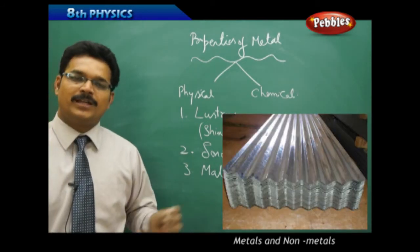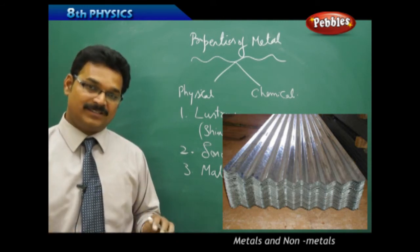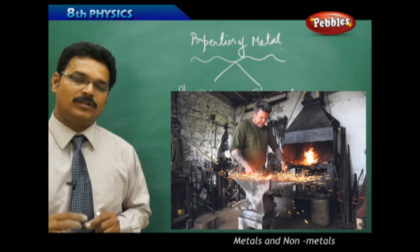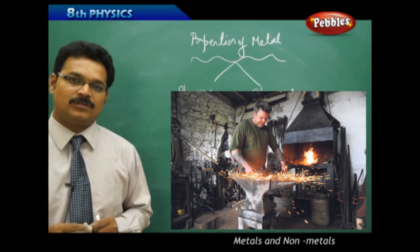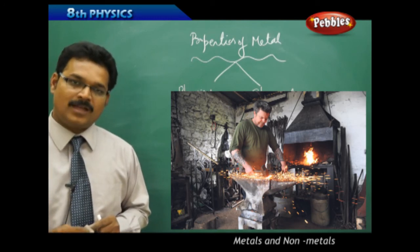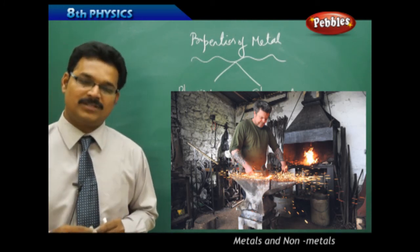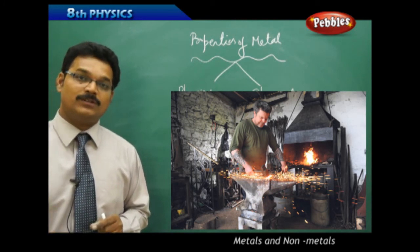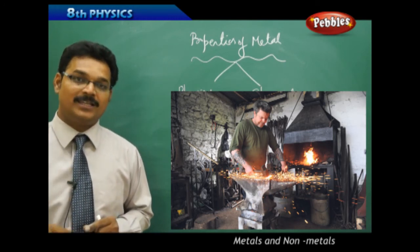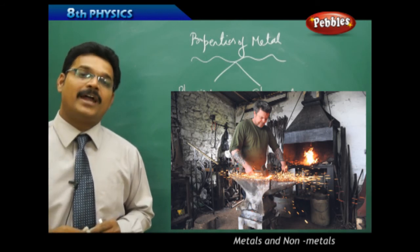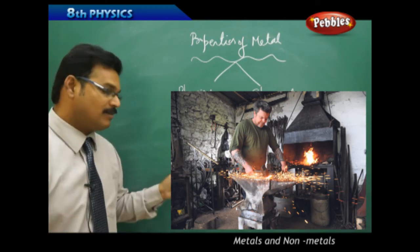With this property, we can understand that all metals can be flattened into thin sheets. Suppose if you go to a person who is making different types of shapes using metals - suppose you want to make a shape using iron material, what do you do? He will heat the iron material. When it gets to high temperature, then he hits the iron material and molds it into different shapes. All this is possible because of malleability.